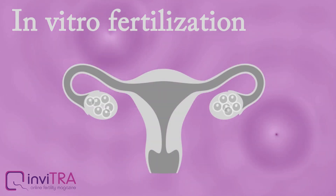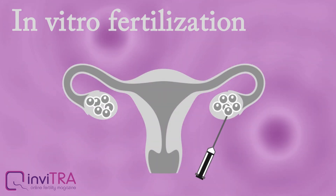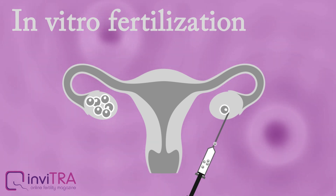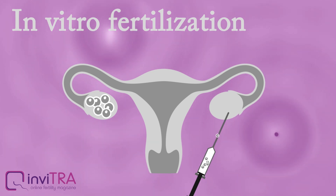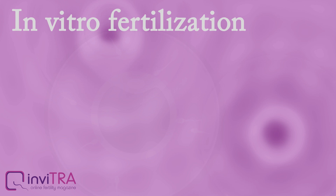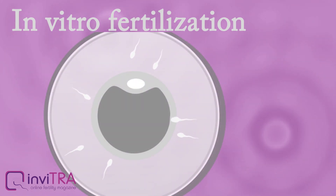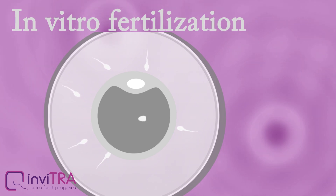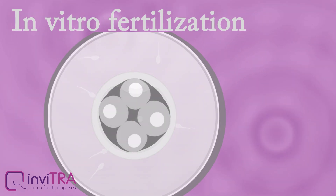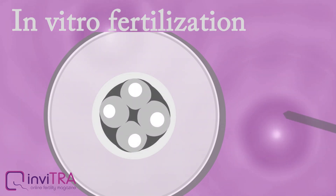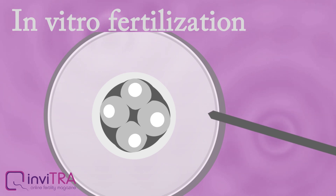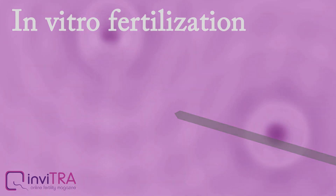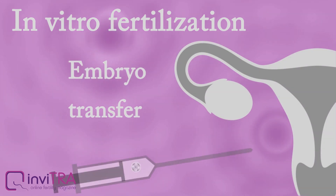It consists of retrieving the eggs through follicular puncture after undergoing controlled ovarian stimulation. Later, the egg is put in contact with the semen sample so that egg insemination occurs randomly. Finally, the embryo is placed into the woman's womb.